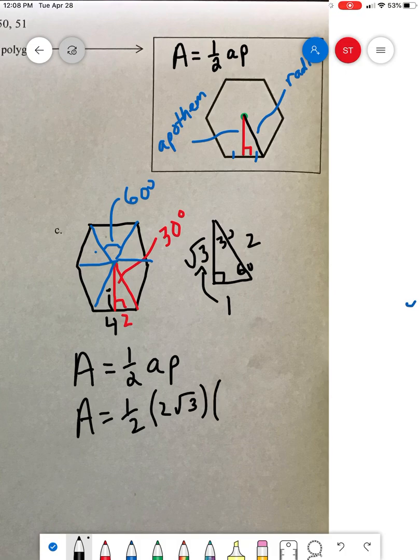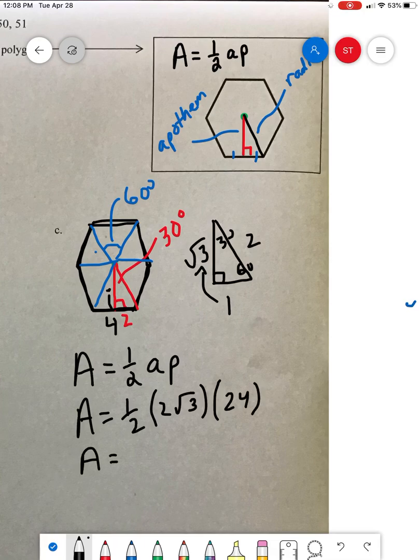Now we need the perimeter. Well, the perimeter is pretty easy. This is 4. Well, how many sides do you have? 6 of them. So 6 times 4 is 24. So we can get an exact answer.